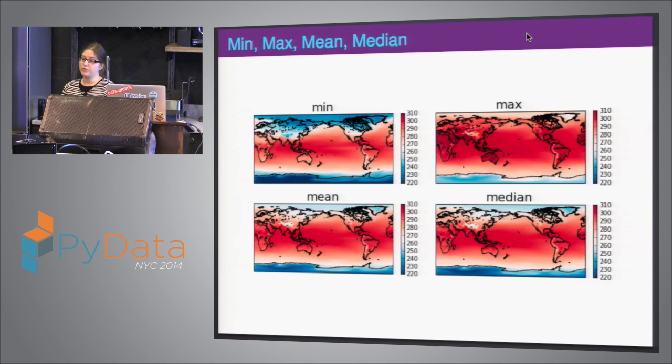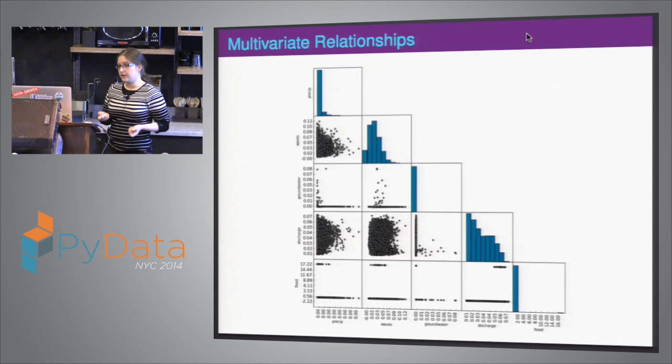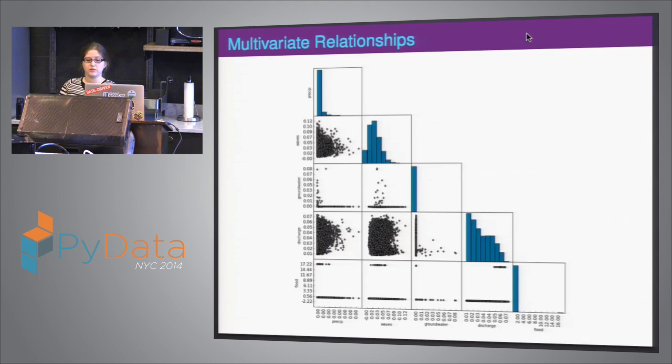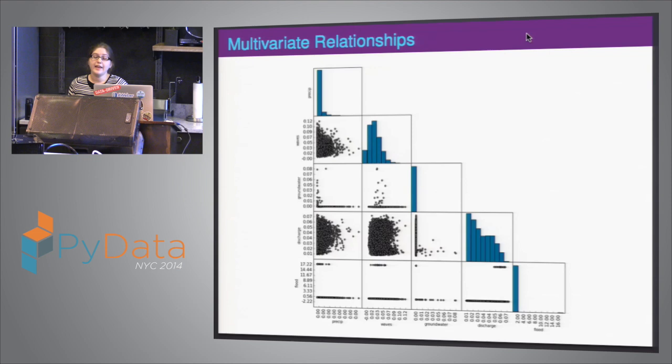So we'll start looking at multivariate relationships. Here, this is flood data, and we're looking at the relationship between all of these waves and groundwater — how all of these are pairwise compared to each other. It's a scatter matrix. Before we feed this into a model based on the idea that these things are related to each other, we want to ask: is there any chance these are actually related to each other?